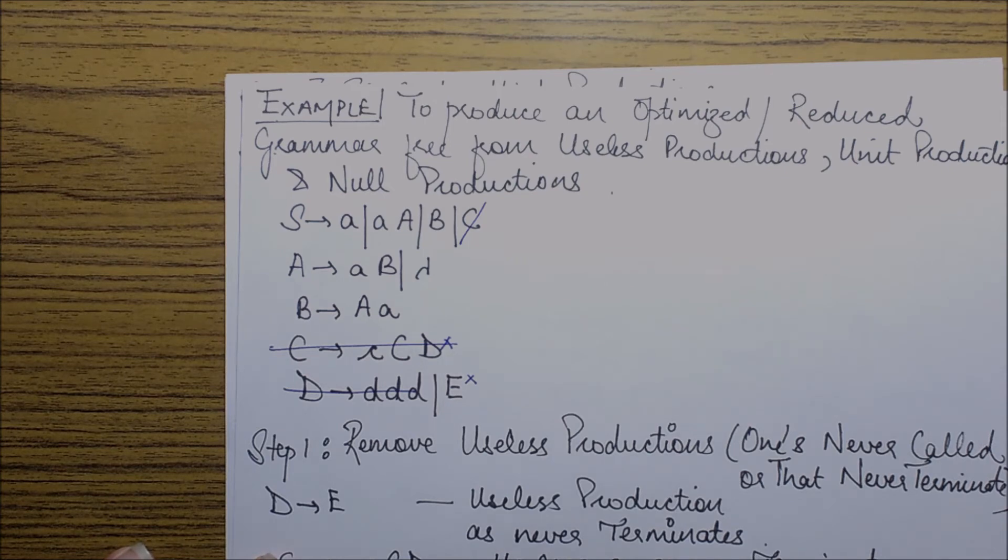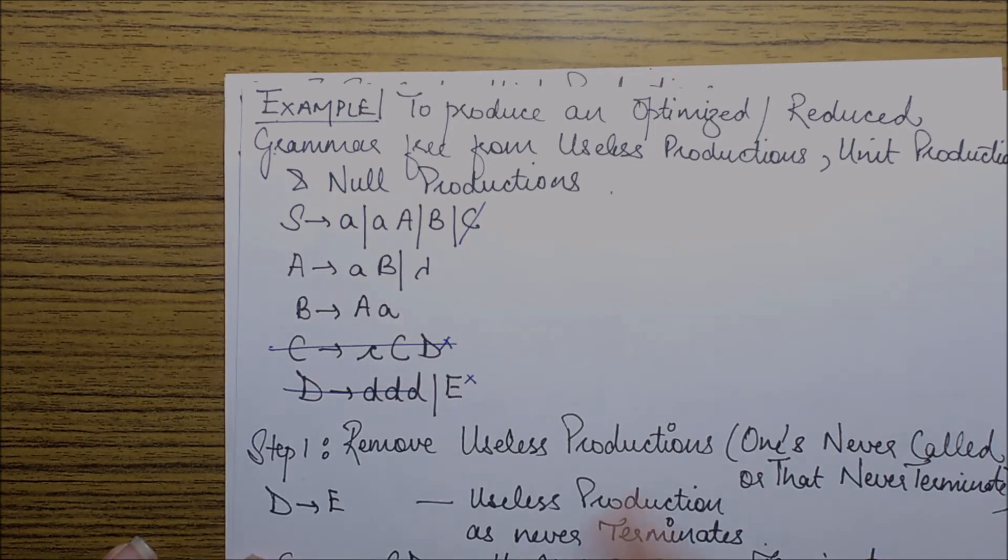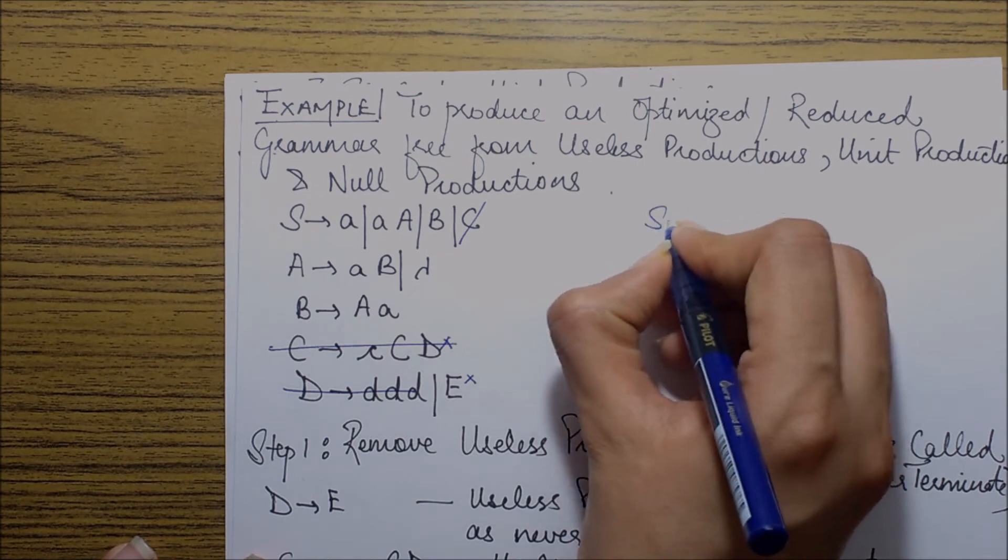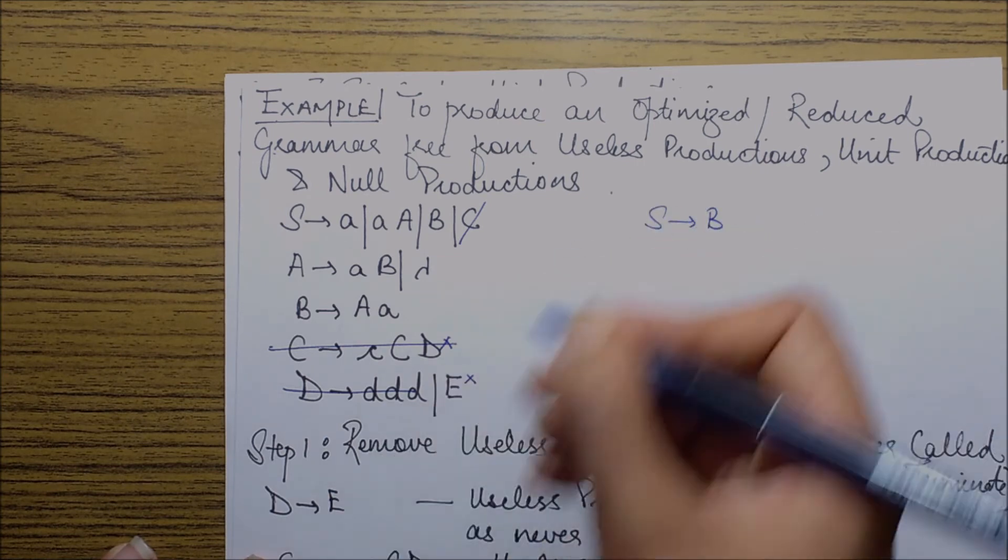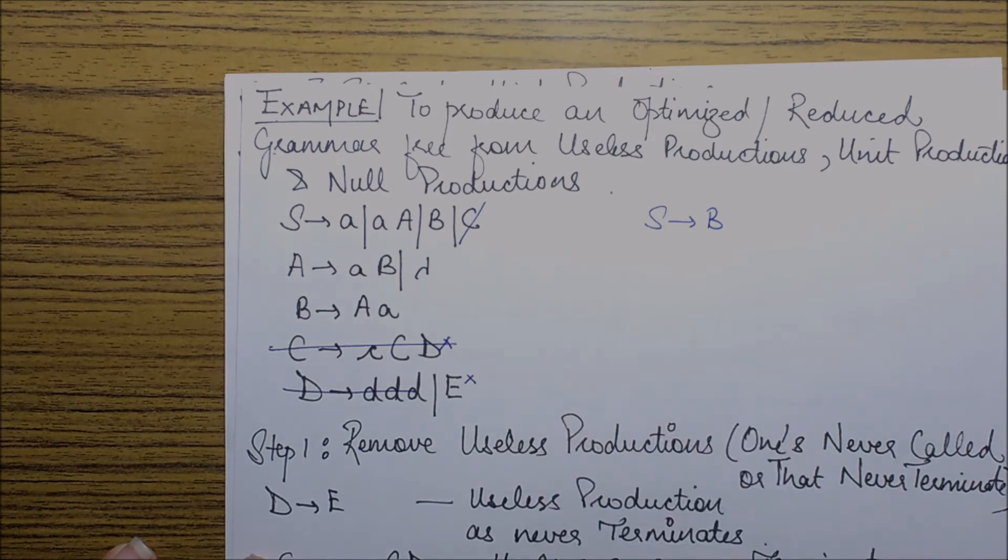So except for these, there are no useless productions present now and we'll proceed on our next phase of finding the unit productions and removing them. As you can notice, the only unit productions present over here are now S goes to B. Only S goes to B because there is no other unit production present over here.